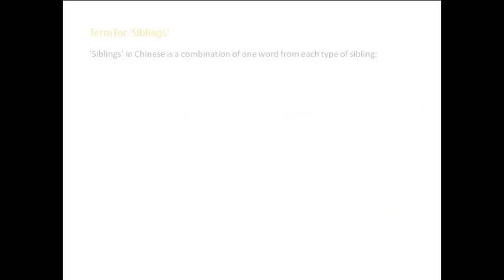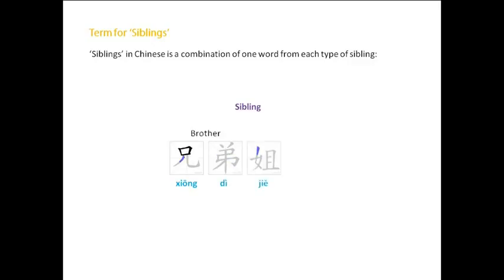Siblings in Chinese is a combination of one word from each type of sibling. So sibling would turn out to be 兄弟姐妹, where 兄弟 means brother and 姐妹 means sister.